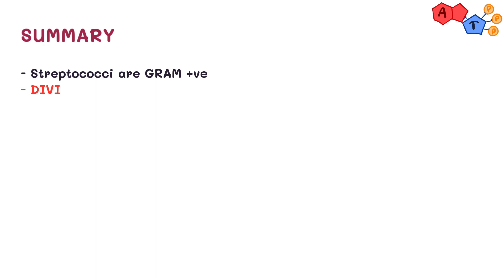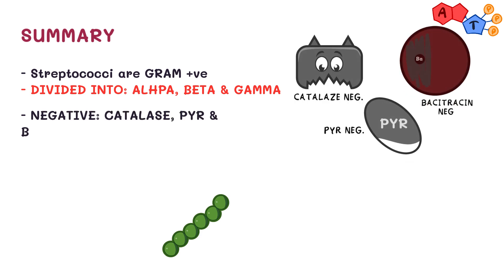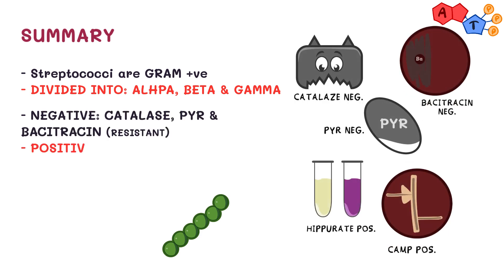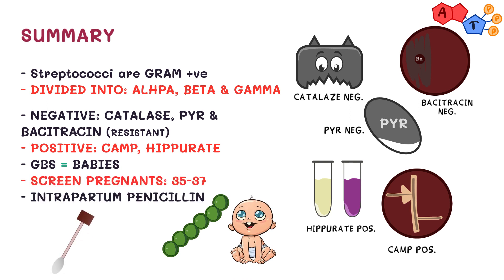To quickly recap: strep is gram-positive and catalase negative. It can be divided into three groups — alpha, beta, and gamma. In this video we focused on the beta-hemolytic bacteria, GBS, or Streptococcus agalactiae. It's negative for catalase, bacitracin sensitivity, and PYR. It's positive for two tests: CAMP and hippurate. Remember, it's related to babies, and for that reason we screen pregnant women between 35 and 37 weeks of pregnancy. If positive, we treat with intrapartum penicillin.